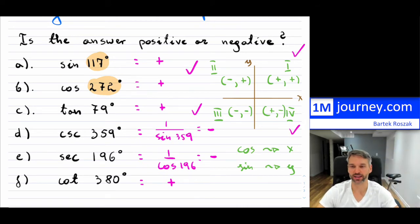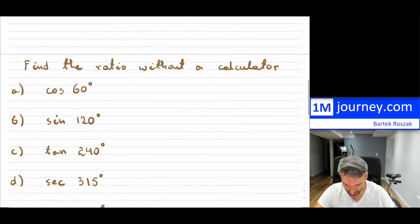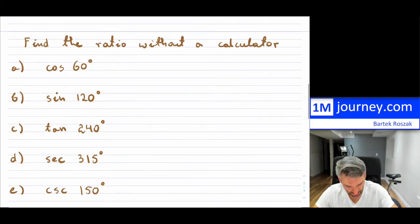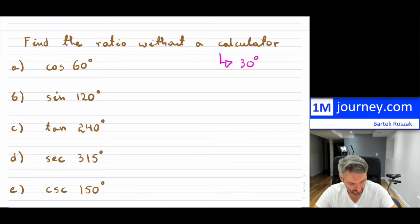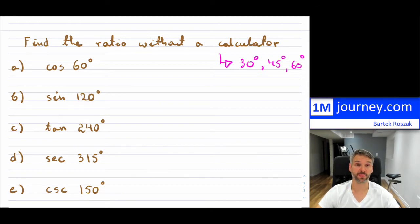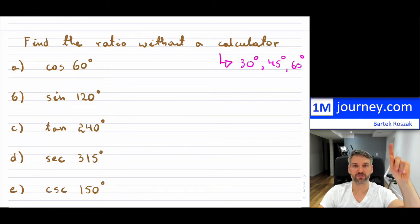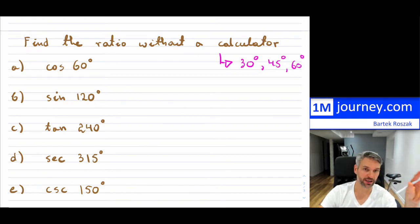Part two asks us to find the ratio without using a calculator. For that we need to know the special angles: 30, 45, and 60 degrees, and the ratios they give. There's a video I did as part of these Grade 11 videos — I'll put a link above if you want to review that topic. Now let's dive in and find these ratios without a calculator.